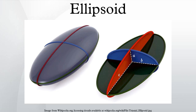Any planar cross-section passing through the center of an ellipsoid forms an ellipse on its surface. This degenerates to a circle for sections normal to the symmetry axis of an ellipsoid of revolution.